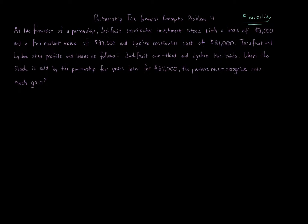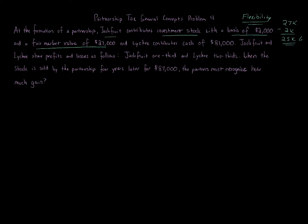Jackfruit is contributing investment stock where there's a built-in gain — basis of two thousand and fair market value of twenty-seven thousand. If Jackfruit was to sell this stock before contributing it to the partnership, Jackfruit would have a twenty-five thousand dollar gain: twenty-seven thousand minus two thousand equals twenty-five thousand. Keep that in mind.